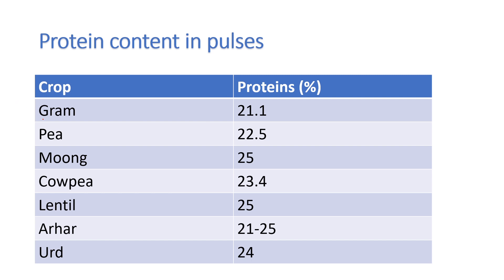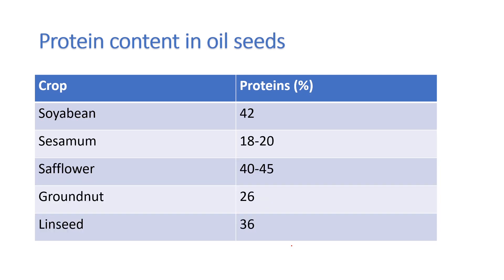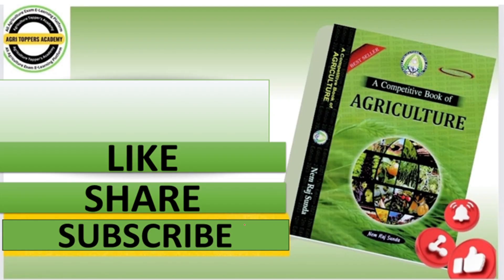Protein content in pulses: gram 21.1%, pea 22.5%, moong 25%, cowpea 23.4%, lentils 25%, all herb 21–25%, urad 24%. Protein content in oilseeds: soybean 42%, sesame 18–20%, safflower 40–45%, groundnut 26%, linseed 36%. That is all about today's lecture. In the next video, we will cover crops — their classification and crop production, including crop characteristics.